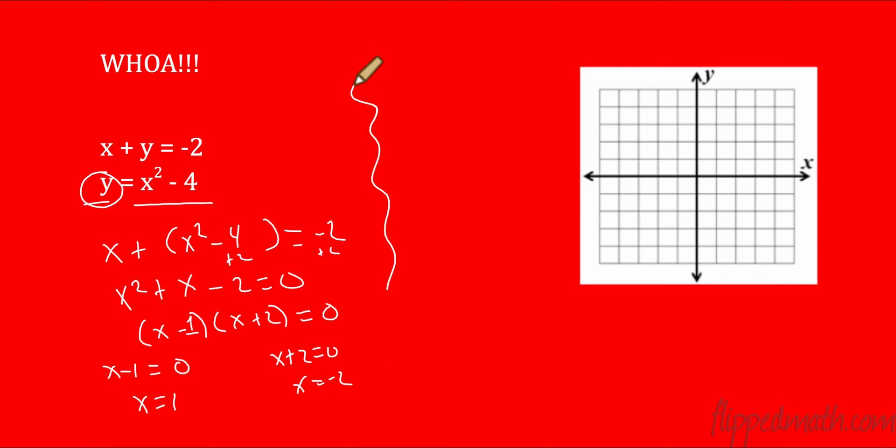So I have two answers. I need to check them both. I'm going to use this equation because it's solved for y. So let's plug in the first one. 1 squared minus 4 is 1 minus 4, which is negative 3. And then we have y equals negative 2 squared minus 4. Remember, negative 2 squared is a positive 4. So I have two answers. I have 1 comma negative 3 and negative 2 comma 0.